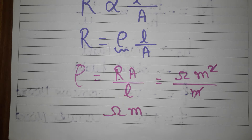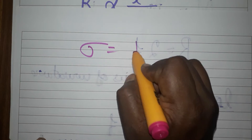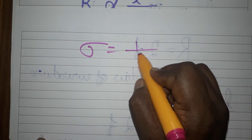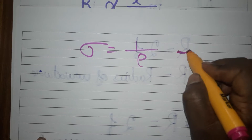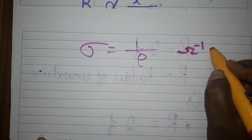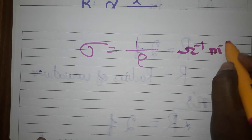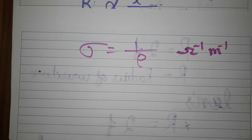Next is conductivity. Conductivity is inversely proportional to resistivity, so conductivity equals one divided by resistivity. Its unit is ohm-inverse meter-inverse.